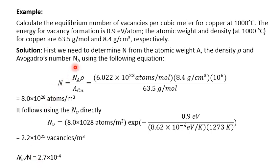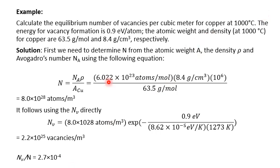The melting temperature of copper is 1083°C. Our calculation is at 1000°C, which is close but not very close to the melting temperature. The ratio is 2.7×10^-4. With increasing temperature toward 1083°C, this number increases exponentially.